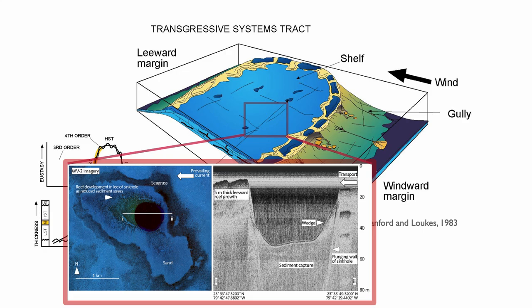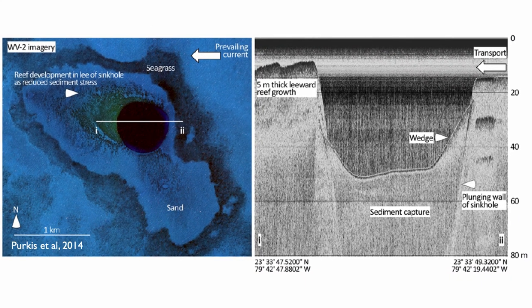As base level is rising, we tend to cover the previous low stand deposits. Here is an amazing image — a former sinkhole that dates from the previous low stand, which was lower than sea level is today, and it's now being reflooded. So there is water on top of it.